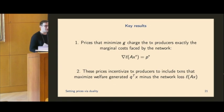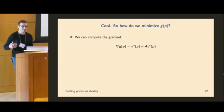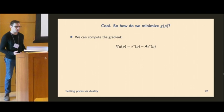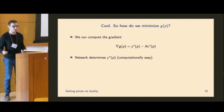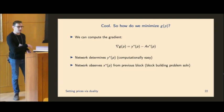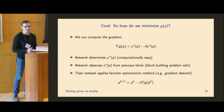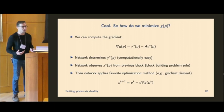Additionally, these prices are going to incentivize transaction producers to include transactions that maximize the welfare generated minus the loss incurred by the network. How to actually elicit these utilities is something that I think some of the other talks are going to go into, but we're going to assume that we can do this for now. So in terms of how do we actually do this, I said this is what you get at optimality. Well, that's great, but how do you actually minimize this? Well, we can compute the gradient. The first term is easy, because the network can determine Y star. So this is kind of something that we just get from standard results and convex optimization. And then the network can observe X star based on what the transaction producers include in the last block. So this is the block building problem solution, and you could just read this off. Then we have the gradient of the dual function, and we can apply whatever your favorite gradient-based optimization algorithm is. So maybe gradient descent, you can play around with the parameters here. You could use momentum, depending on kind of what you want the dynamic behavior of the prices to be.